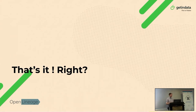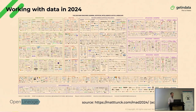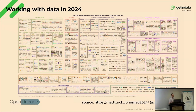I came here to convince you that lineage graphs are cool and you should all implement data lineage. The concept of data lineage is really simple — it's how you implement it that can be the difficult part, especially given how the data landscape in 2024 looks. The industry is filled with different solutions and tools, and we have this expansive stack that processes data. We need to somehow collect all this metadata from all these different tools.